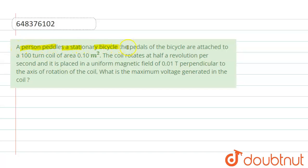A person pedals a stationary bicycle. The pedals of the bicycle are connected to a 100 turn coil of area 0.1 meter square. The coil rotates at half a revolution per second and it is placed in a uniform magnetic field of 0.01 tesla.